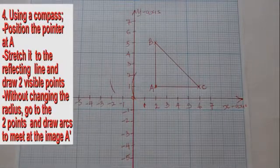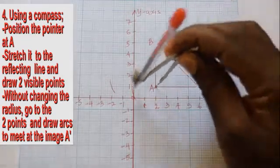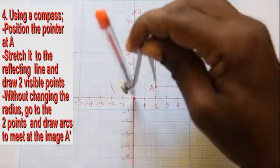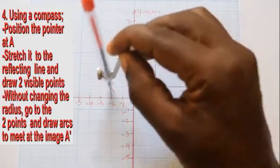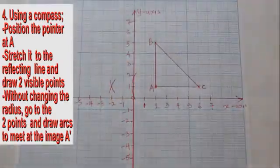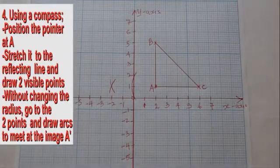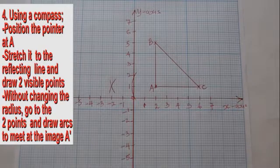Do the same for the second cross — make a second arc and let it intersect with the first arc. The intersection of the arcs forms the image point A prime of the object point A.